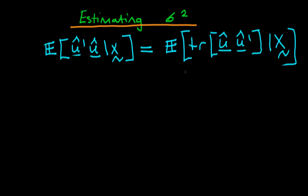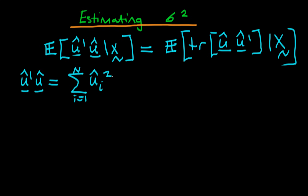So why are these two things necessarily the same? Well, we know from the last video that û' times û is just equivalent to summing from i equals 1 to n of û_i, all squared. So we need to demonstrate that the right-hand side is actually equivalent to this.